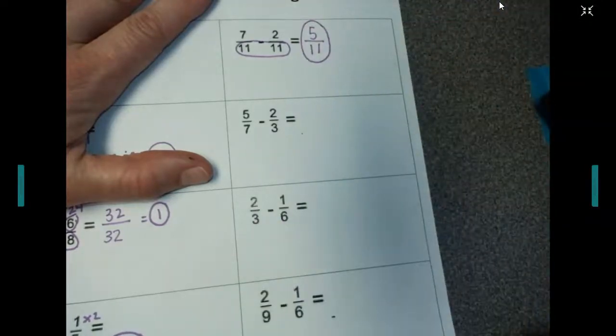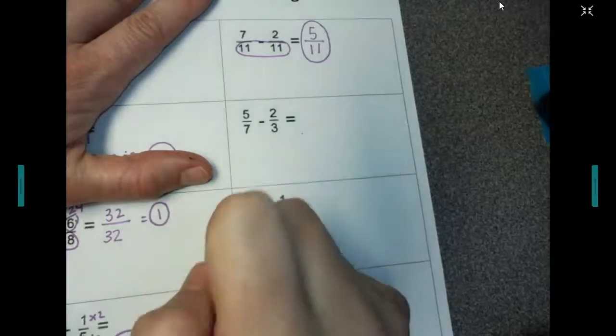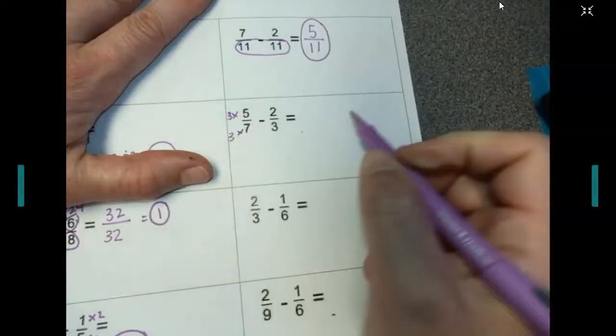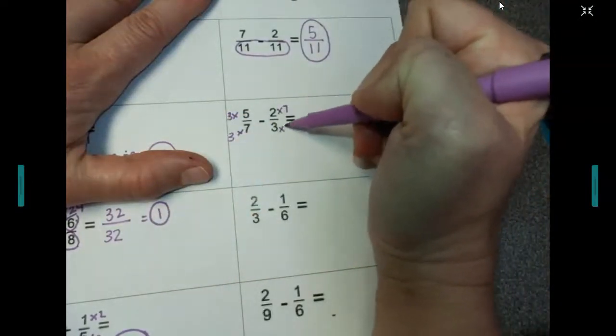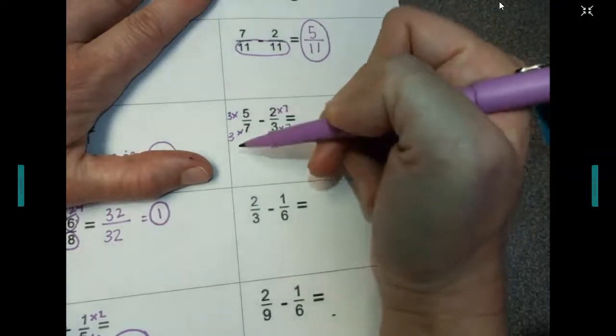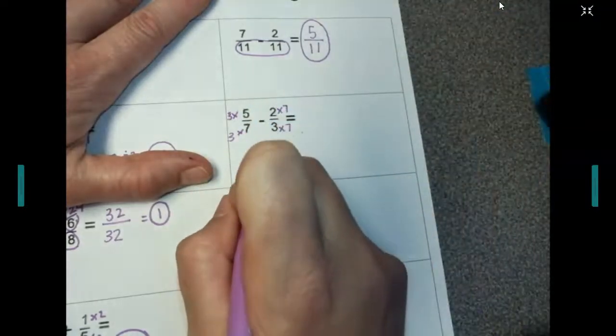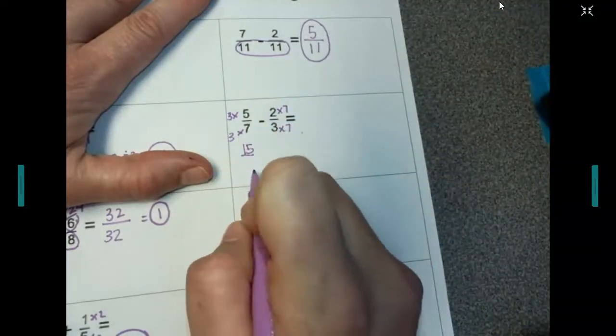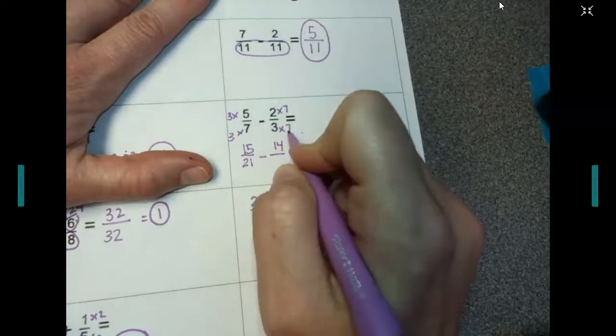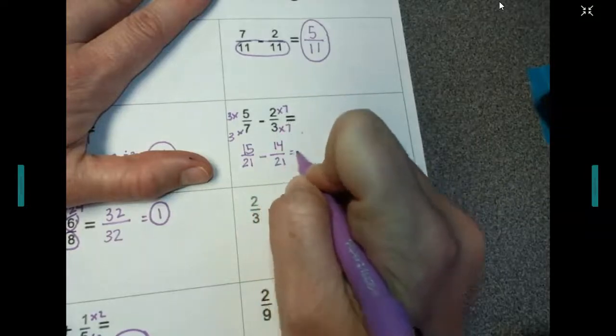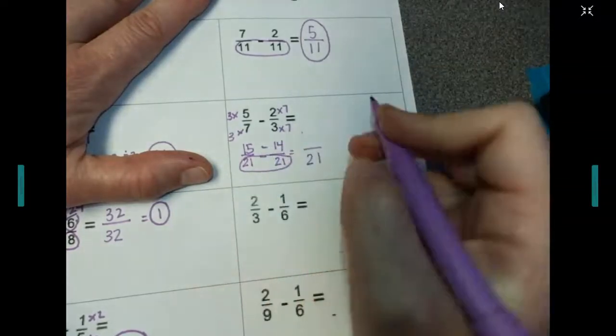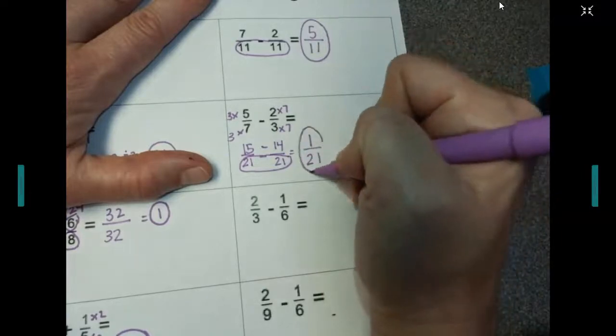Our next one, I'm going to find a common denominator, and it's going to be 21. To get 21, I have to multiply this side by 3 and this side by 7. I am just taking the denominator from this side and taking it here and multiplying. Then this denominator and multiplying it on this side. 3 times 5 is 15. 3 times 7 is 21. 2 times 7 is 14. 3 times 7 is 21. We have the same denominators, so we have 21 at the bottom. And then 15 minus 4 is 1. So we get 1 over 21.